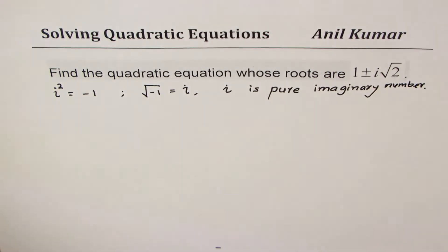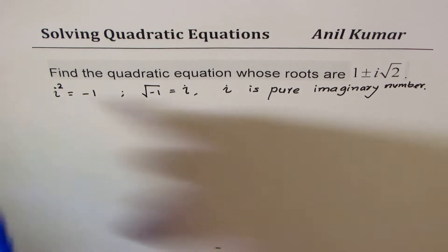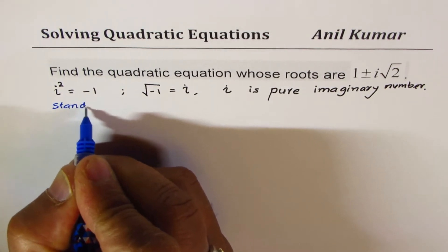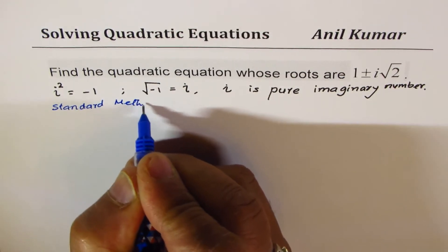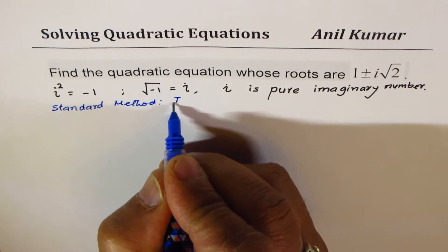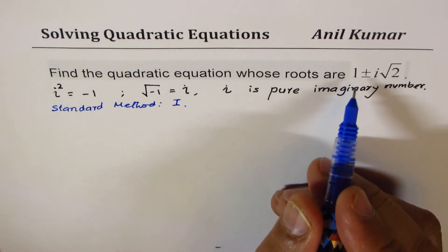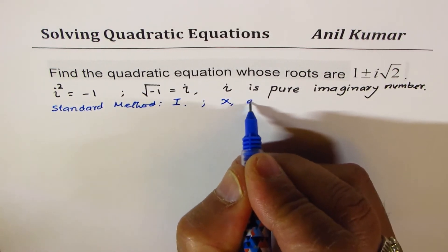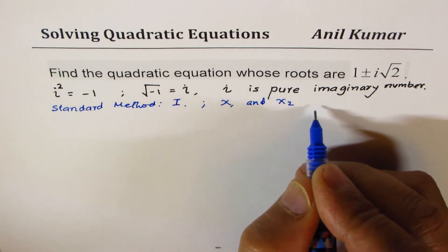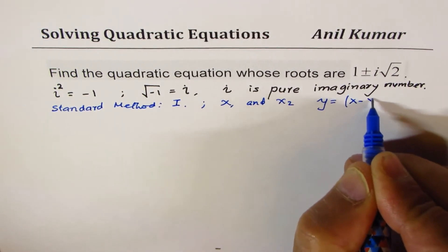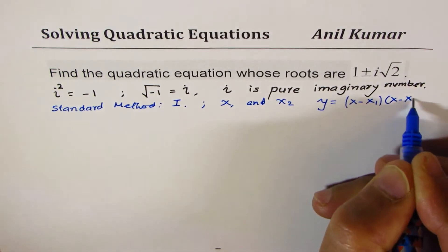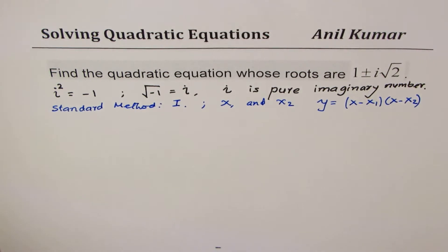I hope this question is going to help all of us. Let me call this the standard method — method number one. The idea here is that if I'm given two roots x1 and x2, then y equals (x − x1)(x − x2). That is the concept, and we are going to apply this to solve the question.